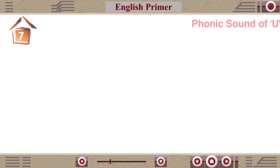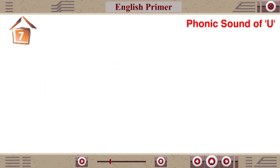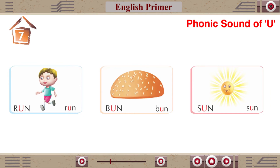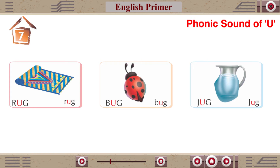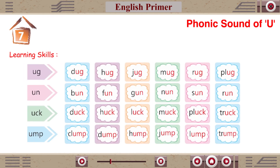Chapter 7: Phonic Sound of U. Dug, Rug, Plug, Burn, Fun, Gun, Run, Duck, Luck, Pluck, Truck.